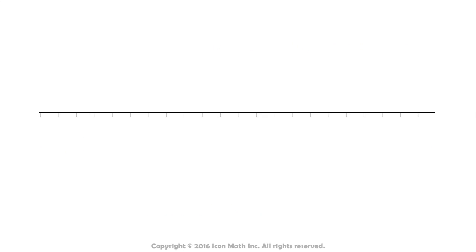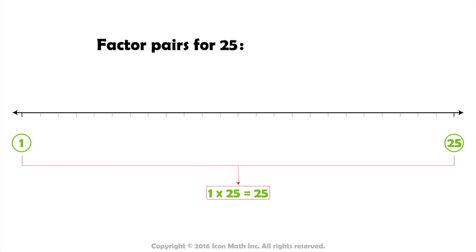As another example, let's look at number 25. Again, the first factor pair for this number is 1 and 25. And the two numbers 1 and 25 are factors for 25.